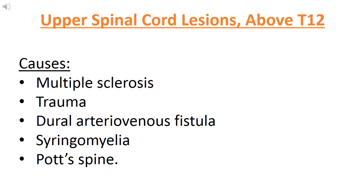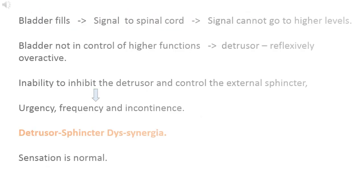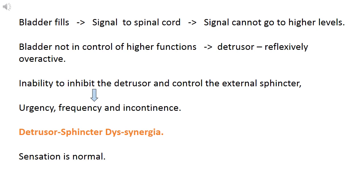Next is lesions of spinal cord above T12 level. The causes include multiple sclerosis, trauma, AV fistulas, syringomyelia and Pott's spine. In this type, when bladder fills, signal goes to lower end of spinal cord but cannot go to higher levels. As the bladder is not in control of higher functions, the detrusor usually becomes reflexively overactive. There is inability to inhibit the detrusor and control of external sphincter, which results in urgency, frequency and incontinence. This is termed as detrusor sphincter dyssynergia.